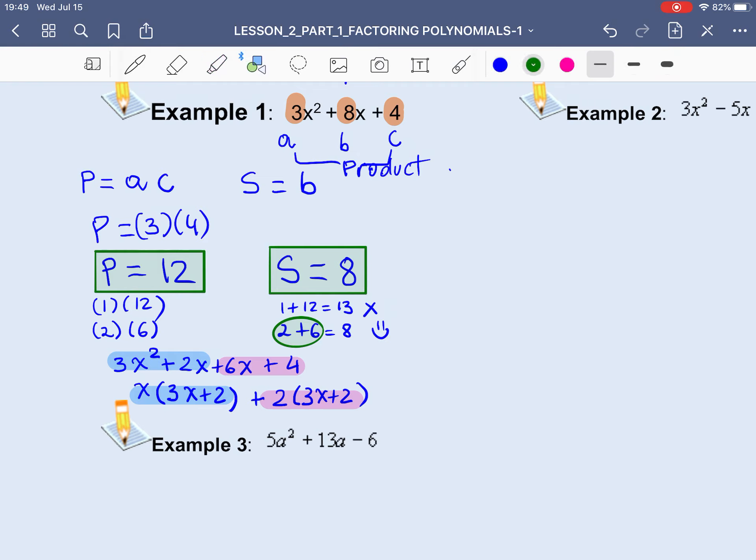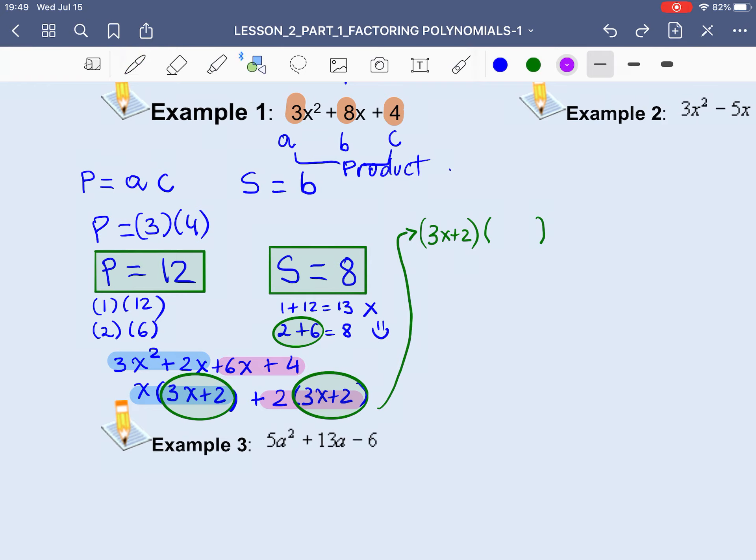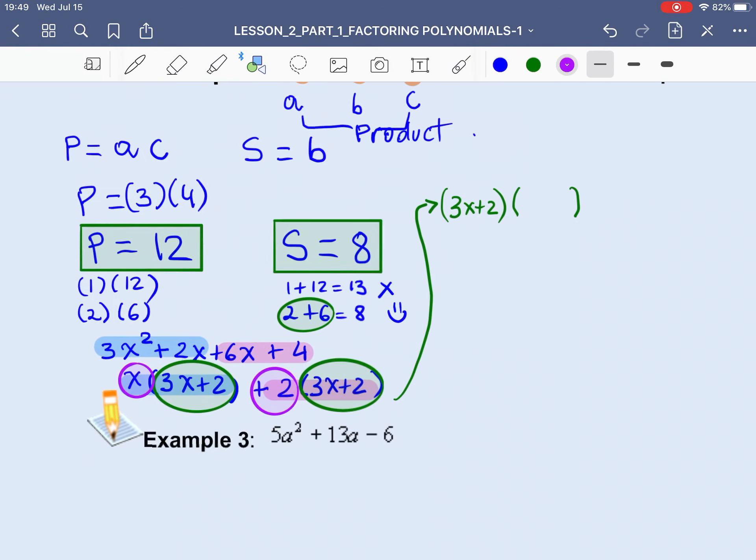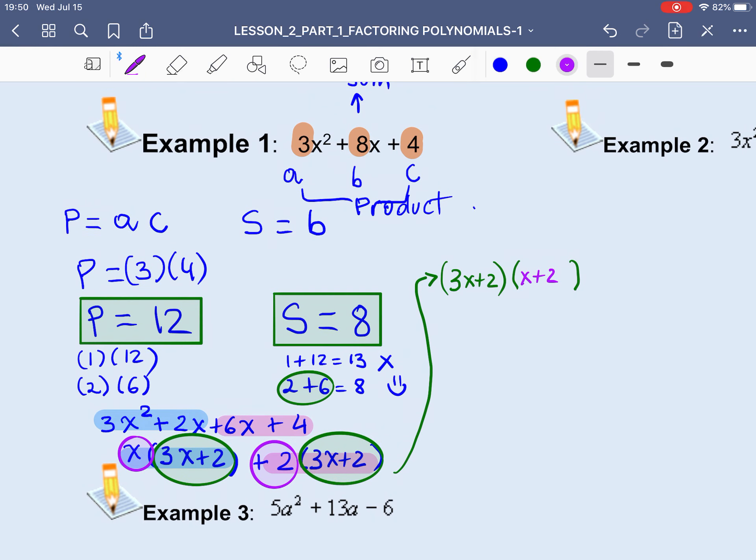Notice how we end up with a common binomial in each group of terms. And the common binomial is 3x + 2. So guess what? We're going to take out the common binomial, 3x + 2. And we're going to write the rest of the terms in another binomial. So here we go. We have x + 2. So x + 2 will go in the other factor, right? So 3x + 2 times x + 2 must be the factored form of the given trinomial.